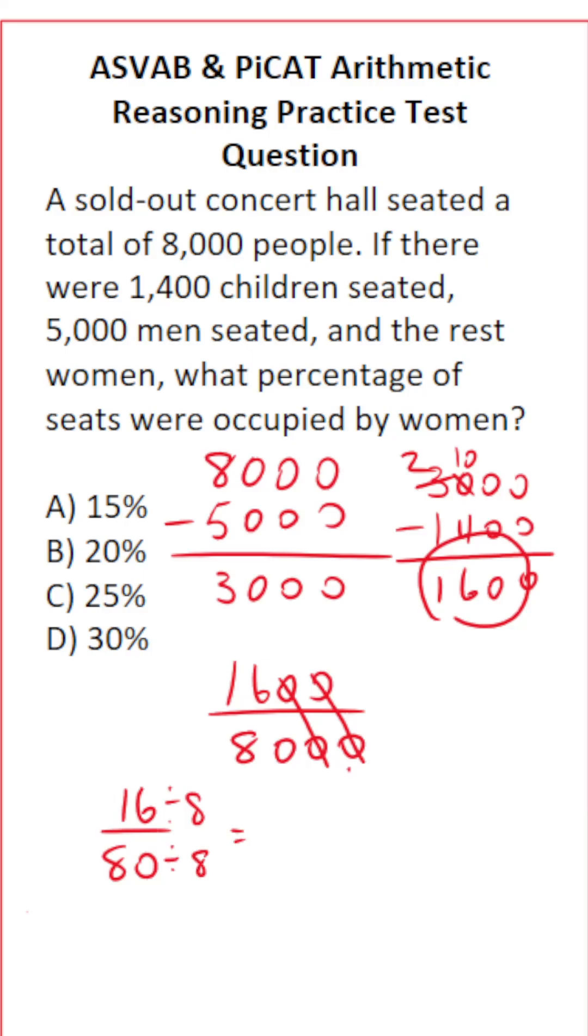Specifically, 16 divided by 8 is 2, and 80 divided by 8 is 10. You should know that 2 tenths is the same thing as 0.2, which is the same thing as 20%.